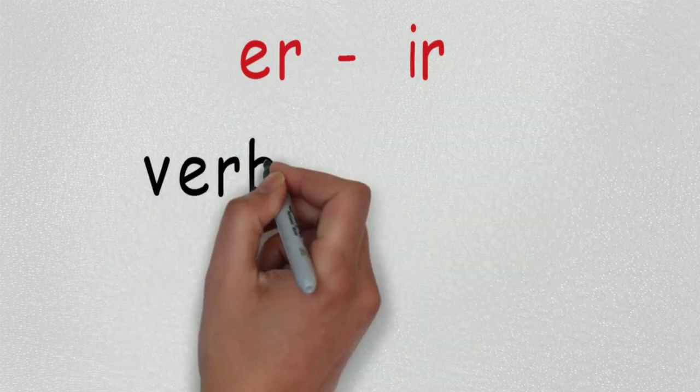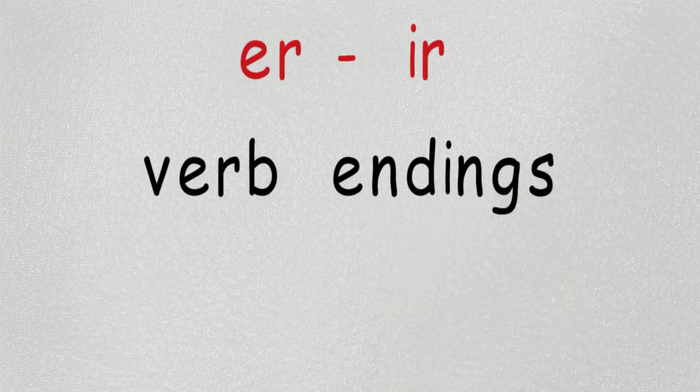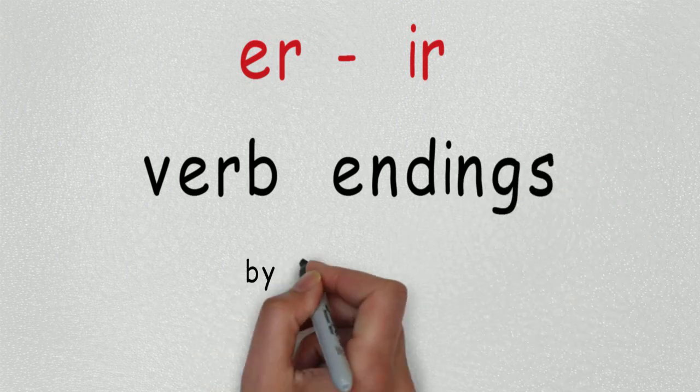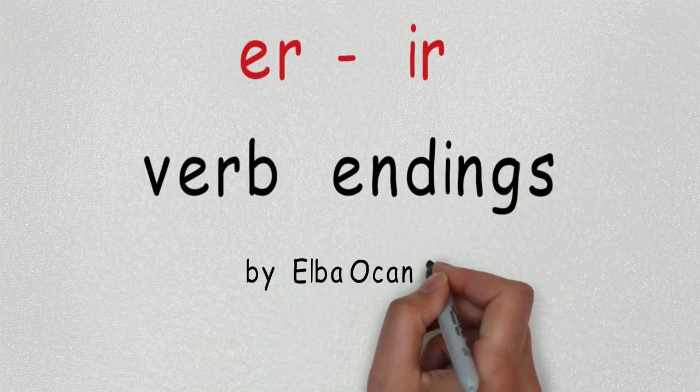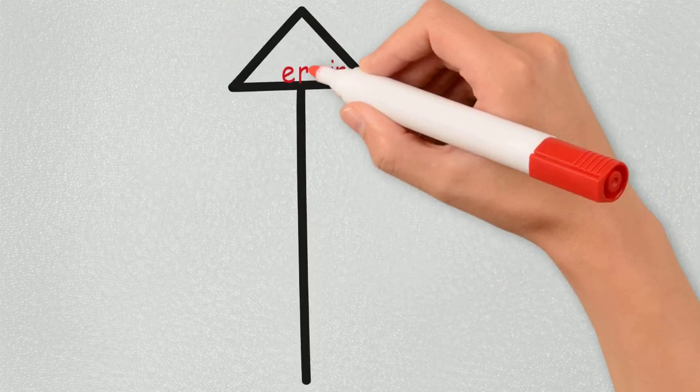E R and I R verb endings. They share all the endings except the nosotros and vosotros form. Let's see the conjugation.